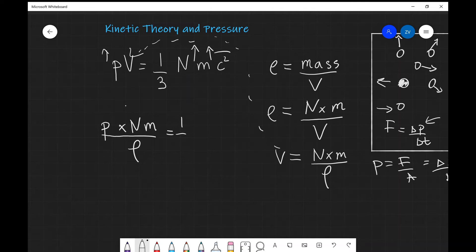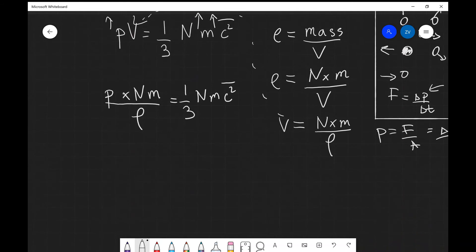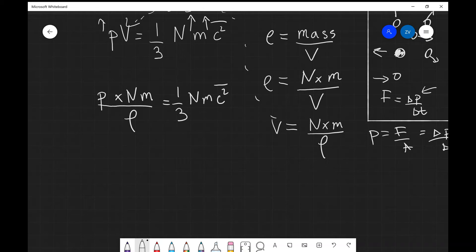This is going to equal one-third N multiplied by m and then we've got the c² term over here. Now we can do quite a lot of cancellations, so N and m can be cancelled.